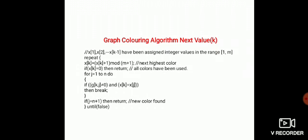x of k equal to 0 means all colors have been tried. Next, for j equal to 1, it checks whether the assigned color to node k is a distinct color from the color of its neighboring node.